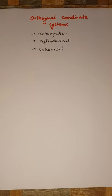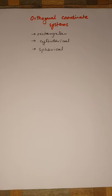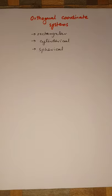The question may arise: why do we need more than one coordinate system? A point in space has the same location and an object has the same shape regardless of which coordinate system is used to describe it. However, the solution of a given practical problem can be greatly facilitated by the proper choice of the coordinate system that best fits the geometry of the problem.